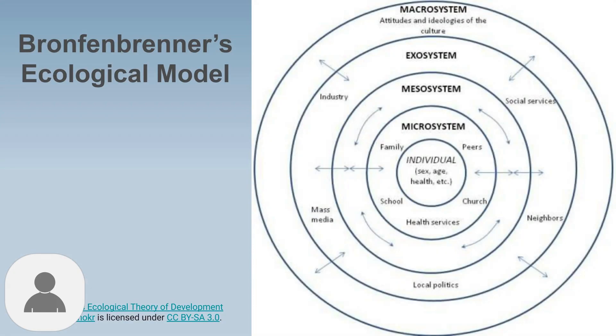Bronfenbrenner's ecological systems model consists of concentric circles of influence, from the immediate microsystem of family and school to the broader macrosystem of cultural values. Each system interacts with the others, creating a complex web of influences that shape a child's development.